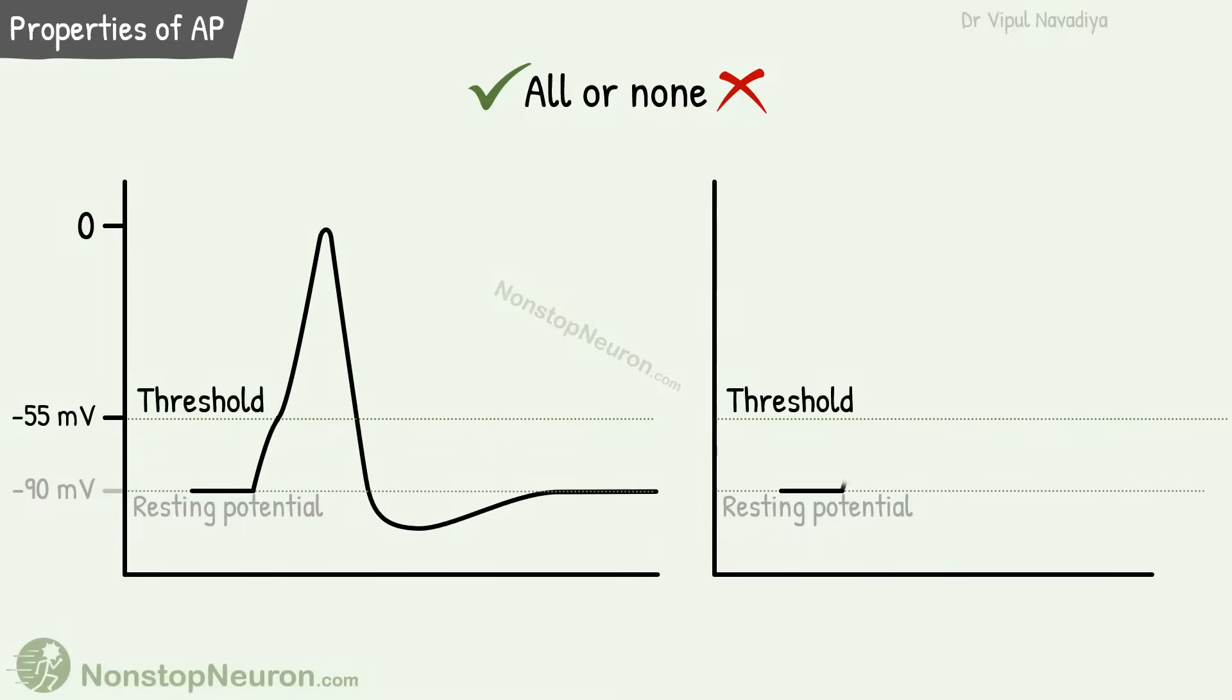On the other hand, if threshold is not reached, we get only sub-threshold changes without action potential.